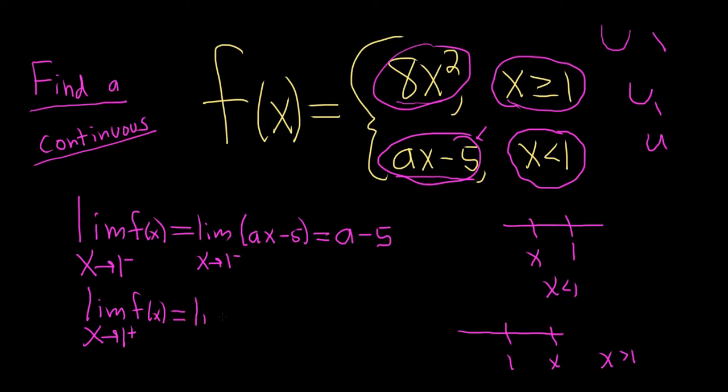So this is equal to the limit. Notice we still write the limit sign. And now we replace f of x with 8x squared. And again, that's because we're approaching from the right, which means x is bigger than 1. So we use the top piece.